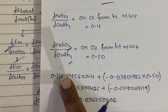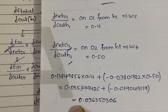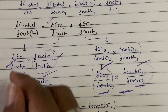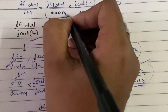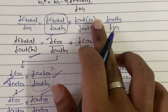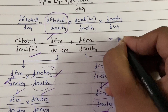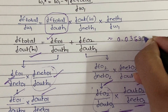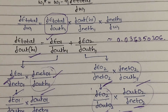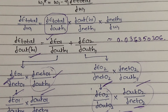After performing all the multiplications and additions, the value of dE_total/d(out_h1) comes out to approximately 0.036350306. It's important to keep all significant digits because each iteration reduces the error by a very small fraction. If you round to only two or three decimal places, you won't be able to observe the change in error across iterations.